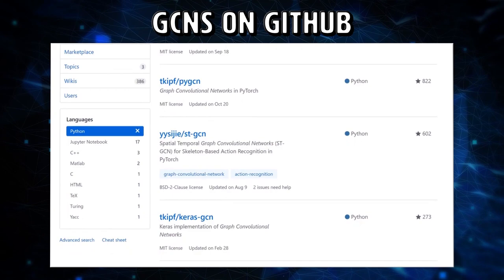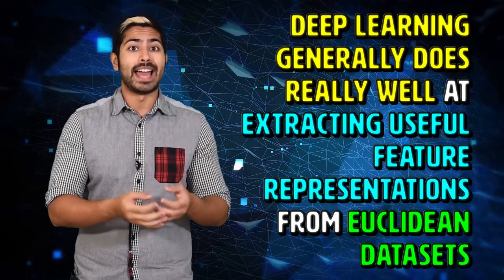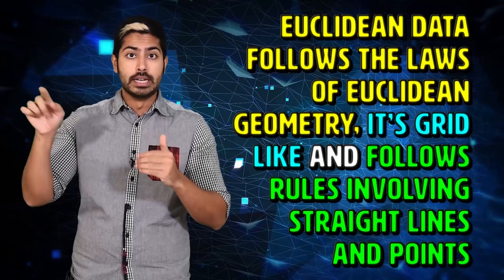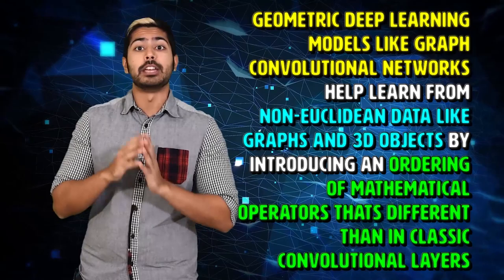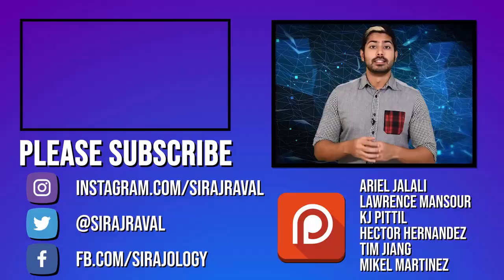But we can already use several of the freely available models on GitHub ourselves to build products and services. There are three things to remember from this video. Deep learning generally does really well at extracting useful feature representations from Euclidean datasets. Euclidean data follows the laws of Euclidean geometry. It's grid-like and follows rules involving straight lines and points. Geometric deep learning models like graph convolutional networks help learn from non-Euclidean data like graphs and 3D objects by introducing an ordering of mathematical operators that are different than in classical convolutional layers.